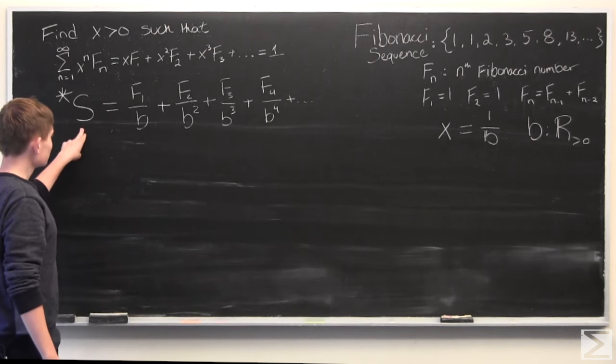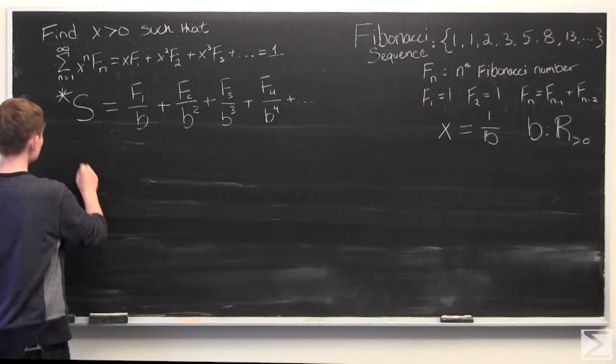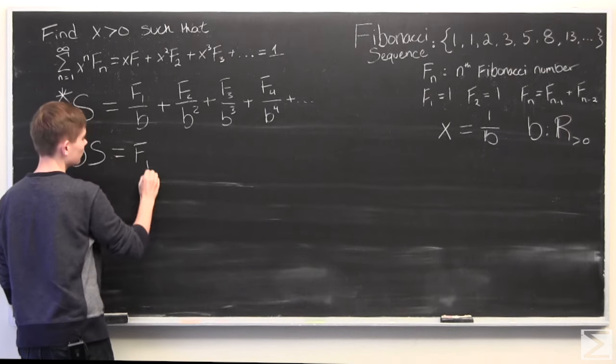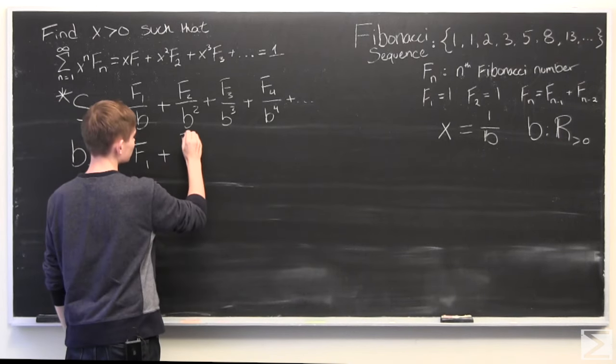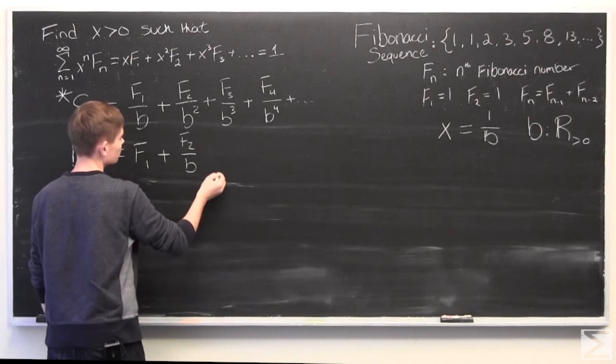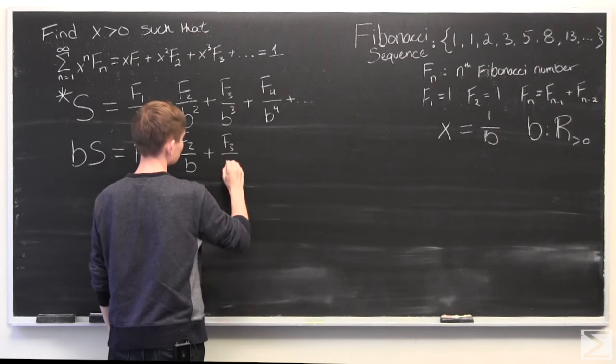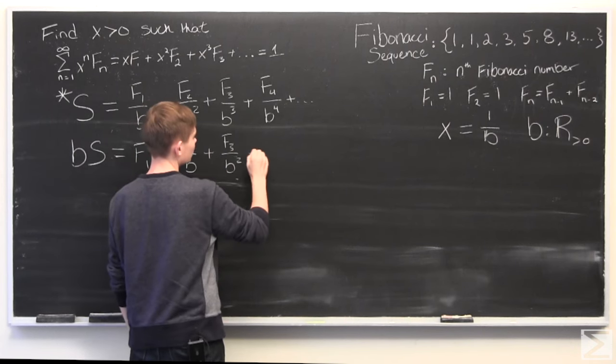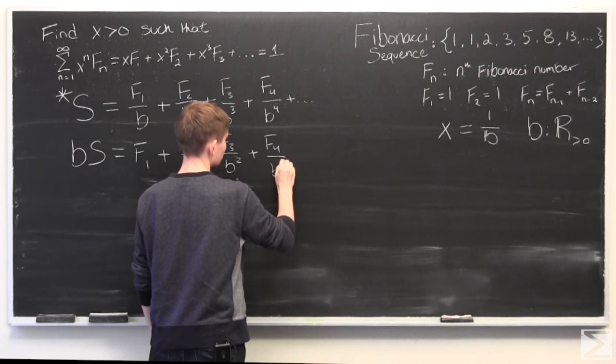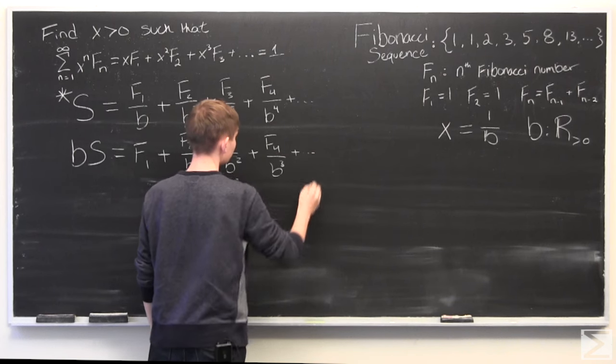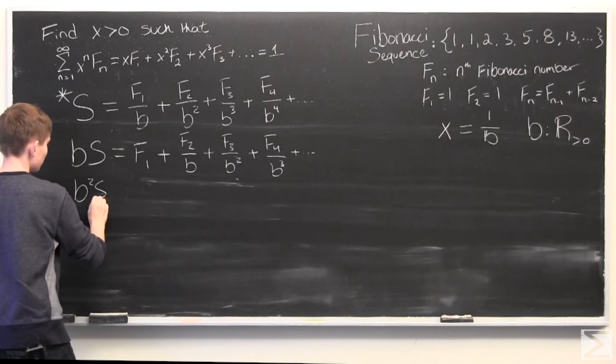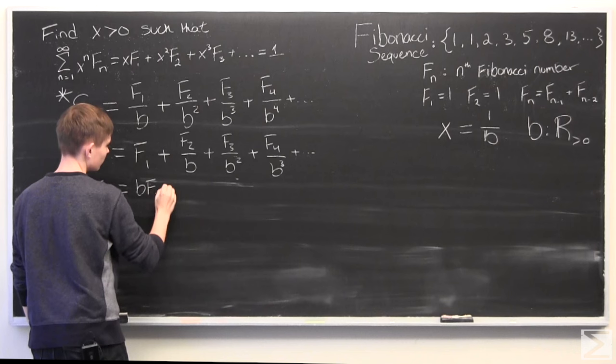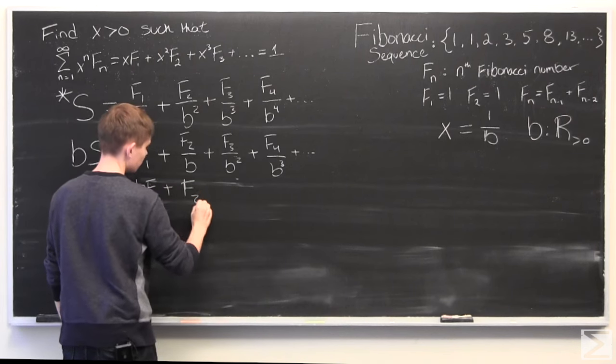So, now that we've defined this equal to s, we can also say that b times s is equal to f1 plus f2 over b, f3 over b squared, and so on. And b squared s is equal to this.